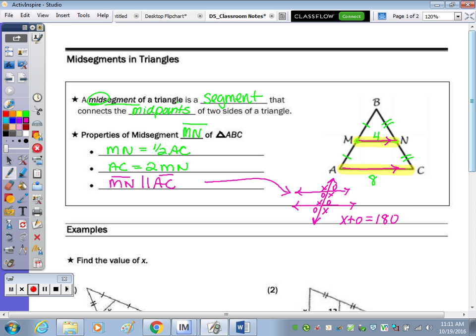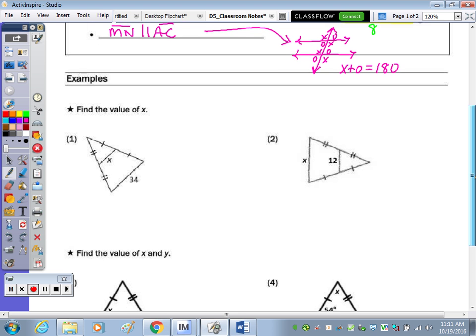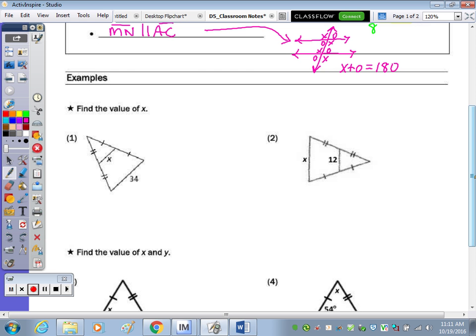So I'm looking at the examples. Let's start with 1 and 2, which just says find the value of X. As I mentioned, I would, in each question, highlight your midsegment and the side opposite, because the midsegment is half of the side that's opposite, or you can say the longer side is double the shorter. So the shorter side, so X here, number 1, is going to be 1 half of 34, which is 17.